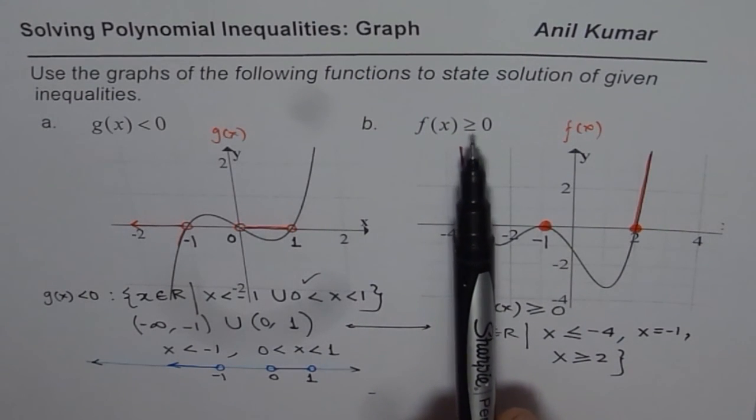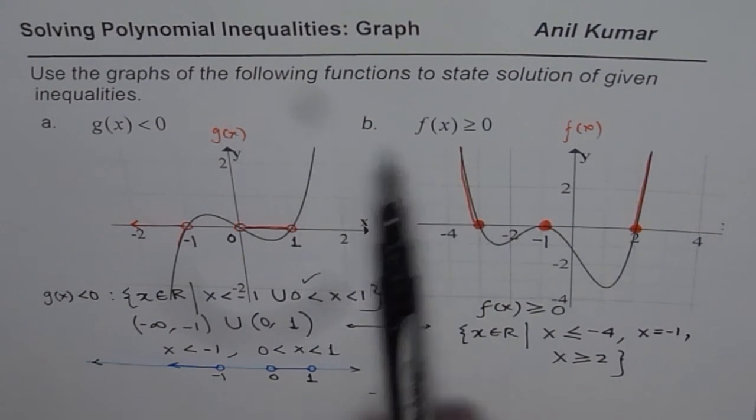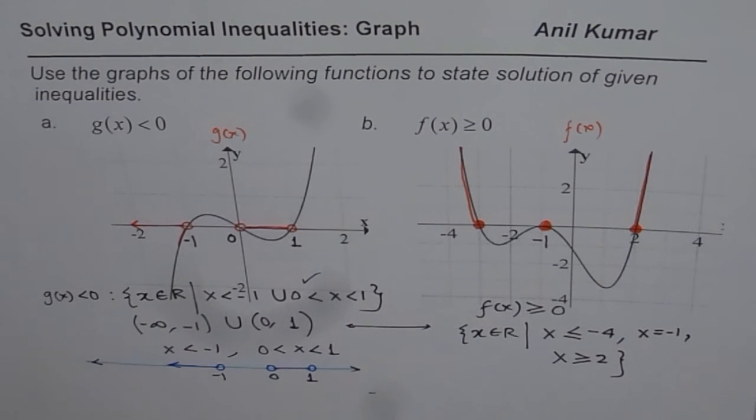So whenever equal to is involved, you have to include the zeros, but if it is not involved, do not include zeros.